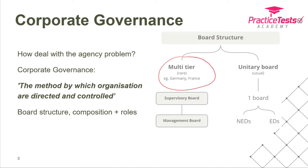Some jurisdictions have what's known as a multi-tier system, where they'll have a supervisory board — the senior board on which non-executive directors sit. Everyone on that board has no executive or operational responsibilities. Reporting into that supervisory board is a management board, where all the executives sit — your head of finance, HR, and IT, for example. Keeping those two separate has advantages, but it also means separate meetings, not all the brains in the room at the same time, and it's relatively expensive due to all the communication required between the two boards.